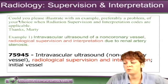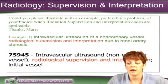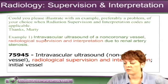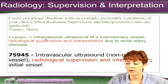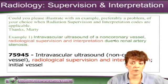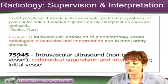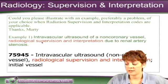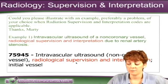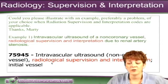Could you please illustrate with an example when radiation supervision and interpretation codes are applicable? Here's an example: intravascular ultrasound of a non-coronary vessel, radiological supervision and interpretation due to renal artery stenosis. This came out of one of our workbook exercises. When you look up the code in the index, it points you to 75945. When you read the description in CPT: intravascular ultrasound, non-coronary vessel, radiological supervision and interpretation, initial vessel.